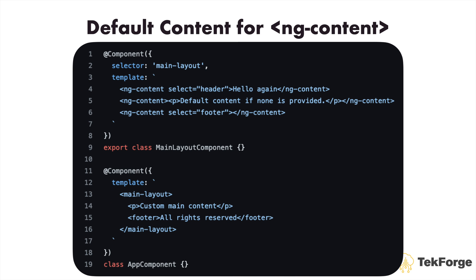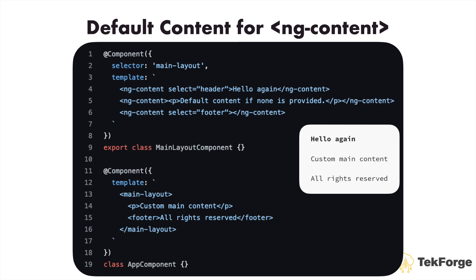The ability to provide default content for ng-content ensures that components remain functional even when projected content is missing. This feature is useful for creating more resilient components that can handle missing or incomplete content gracefully, and allows you to avoid duplicated code. In this example, though the app component doesn't provide content for the header section when using the main layout component, the output of rendering the app component would still show the default content.